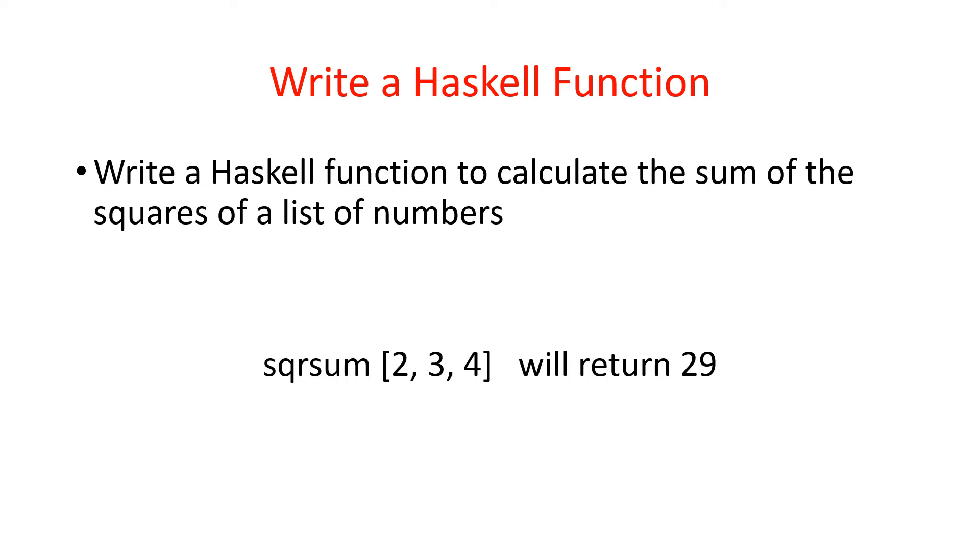Here's a method you can try writing. You can try this with Haskell yourself, or just try writing it down. We want to write a method that sums the squares of the numbers. In this example, two squared is four, three squared is nine, four squared is 16, add them all up and you get 29. So try this. You can pause the video while you try it.